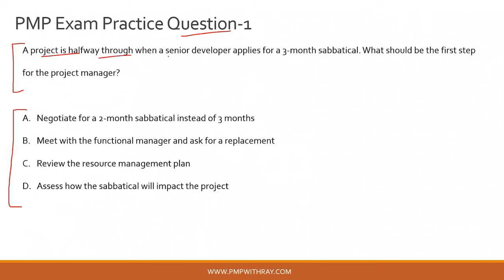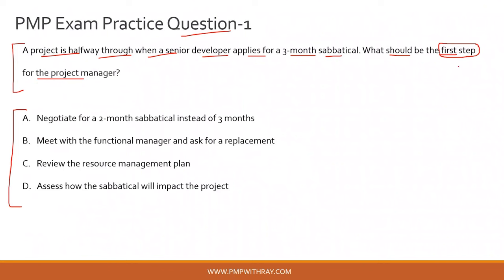A project is halfway through when a senior developer applies for a three-month sabbatical — basically a prolonged holiday or leave taken for personal reasons. What should be the first step for the project manager? The keyword to note in the question stem is 'first step.' It is not asking what is the best course of action, but specifically the first step in this scenario.